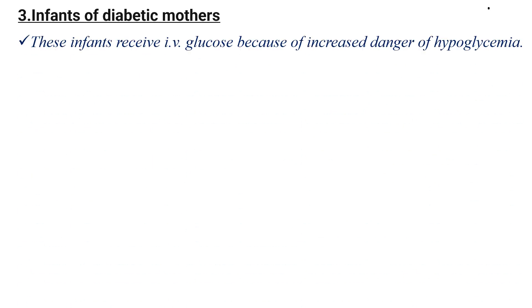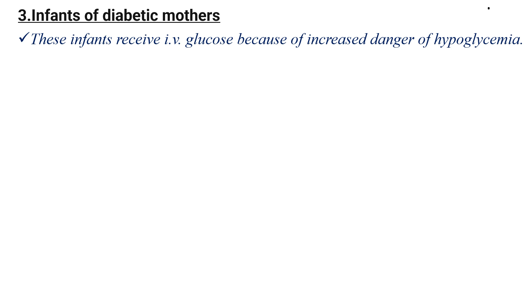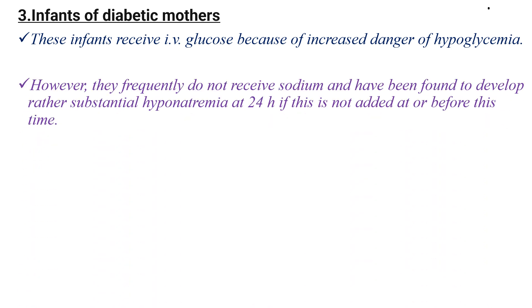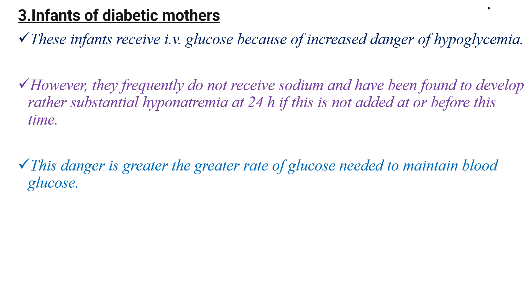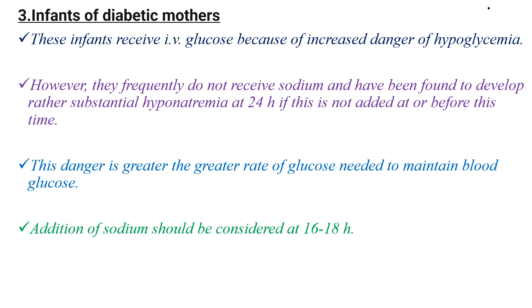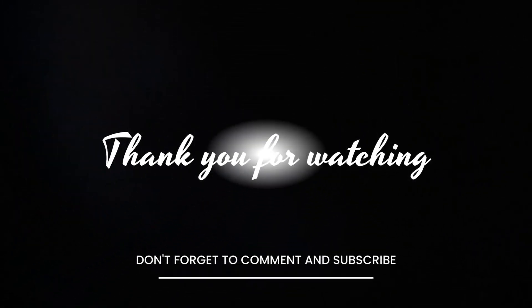Infants of diabetic mothers receive IV glucose because of the increased danger of hypoglycemia; however, they frequently do not receive sodium and have been found to develop rather substantial hyponatremia by 24 hours if sodium is not added at or before this time. This danger is greater the higher the rate of glucose needed to maintain blood glucose. Addition of sodium should be considered at 60–80 hours of life for infants of diabetic mothers — that means changing the fluid from 10% dextrose water alone to 1/4 NS and 3/4 D10 at 60–80 hours of life, unlike others where we do this around 24 hours of life. This is all about maintenance fluid in neonates. Thank you for watching.